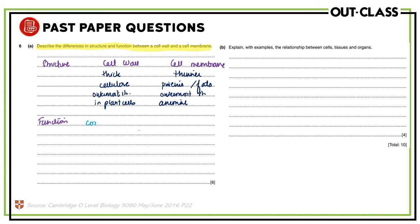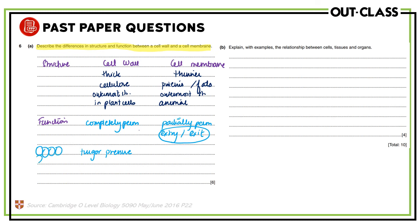Coming to function: the cell wall is completely (freely) permeable, whereas the cell membrane is partially or selectively permeable. Because of that, the cell membrane controls the entry and exit of substances to and from the cell — not the cell wall. One important function of the cell wall is to maintain turgor pressure inside plants. When water enters plant cells, they swell up and provide structural support to one another. The cell wall maintains turgor pressure and the shape of the cell.